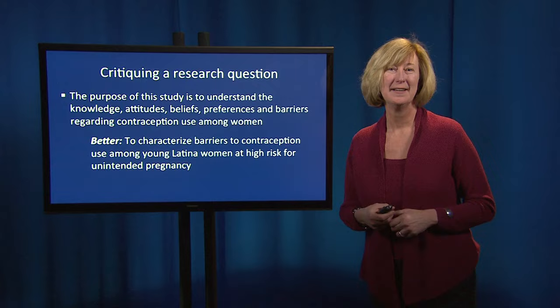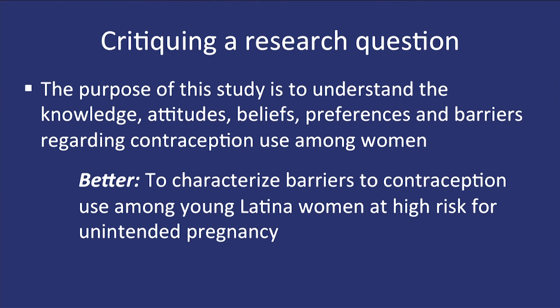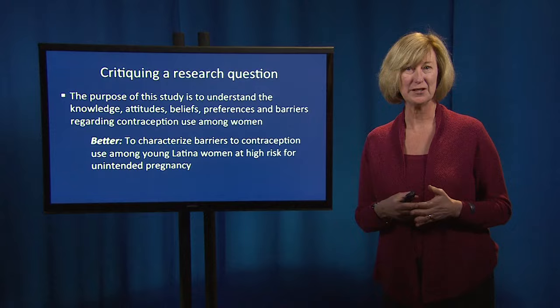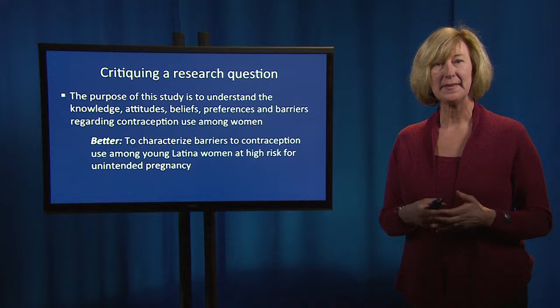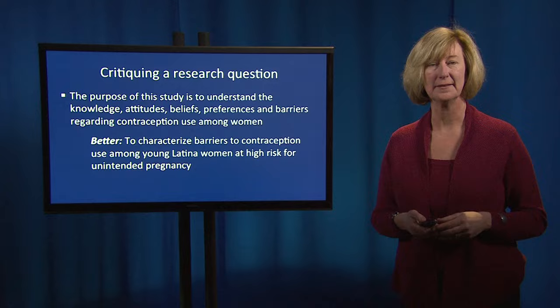The refined research question looked like this: the study was to characterize barriers to contraception use — very specifically focused on barriers themselves — among young Latina women at high risk for unintended pregnancy. This question addressed a very specific gap in the literature, was clearly much more feasible to implement, and was very precise in what would be examined in terms of data collection and analysis.